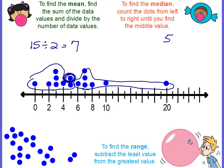Now let's find the range. To find the range, you just subtract high minus low. The highest number is twenty, the lowest number is zero. Now it's not the highest number on the number line — it's the highest data piece and the lowest data piece. And twenty minus zero is twenty.